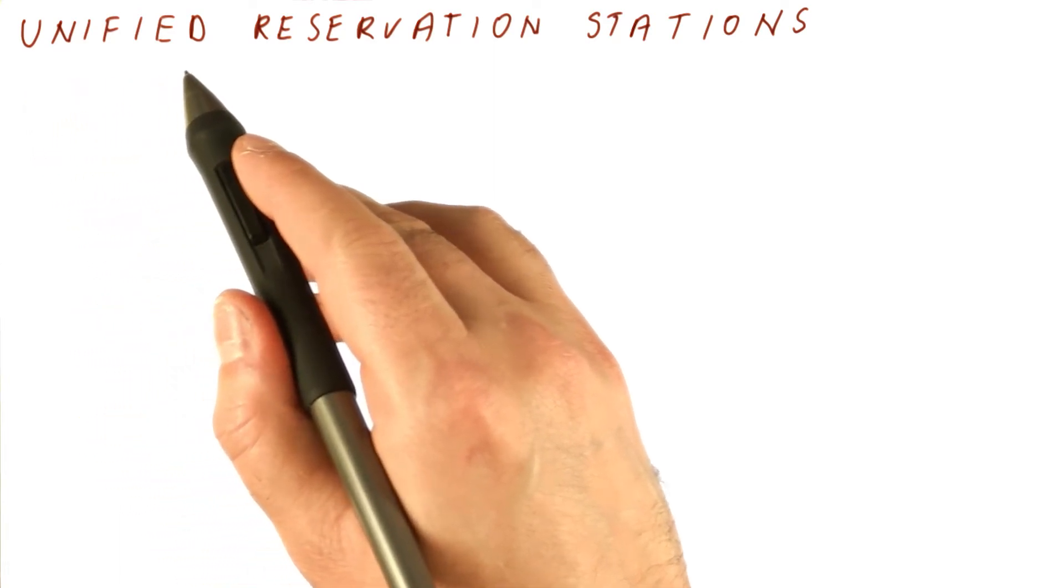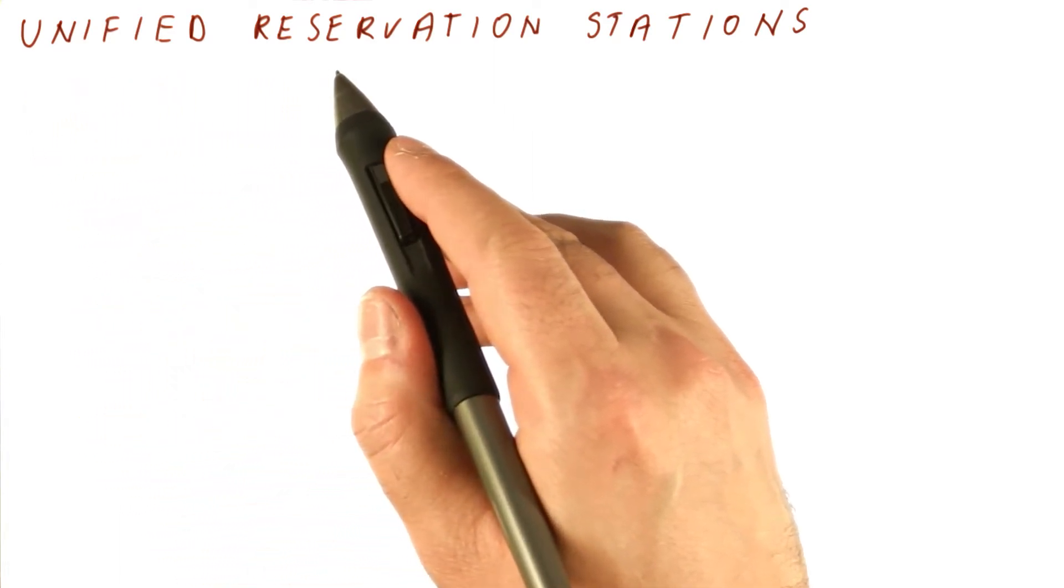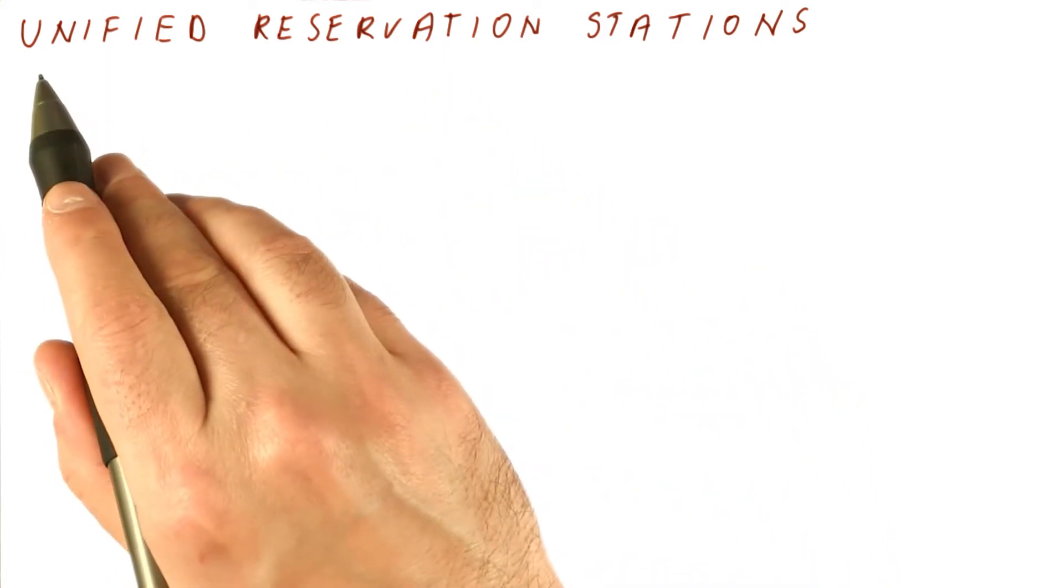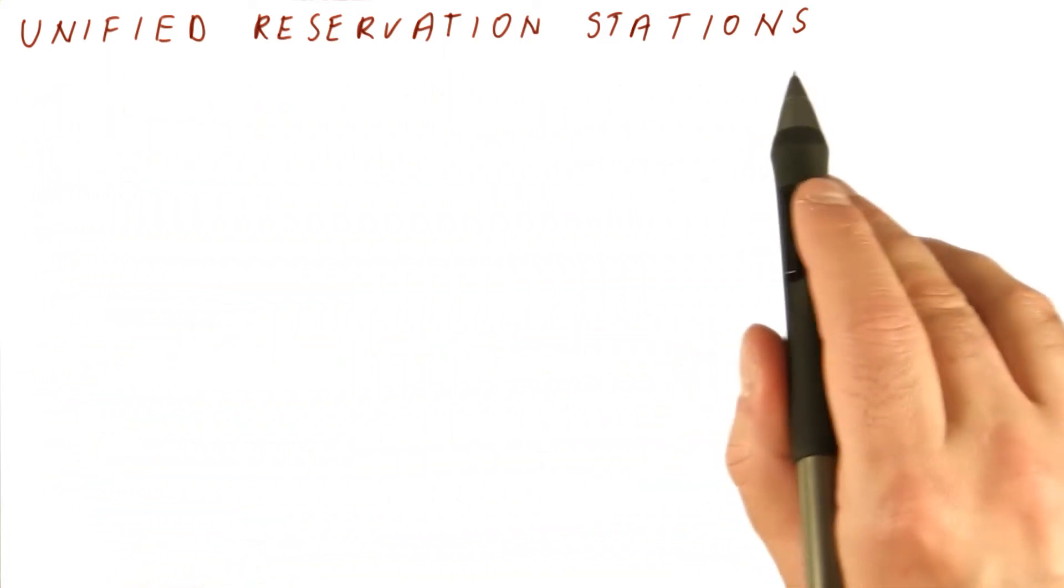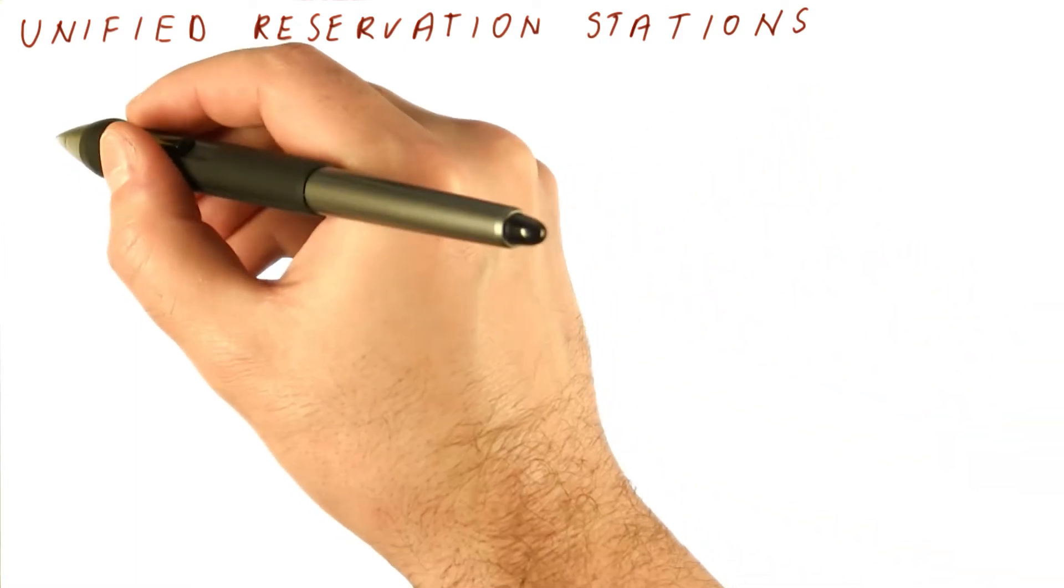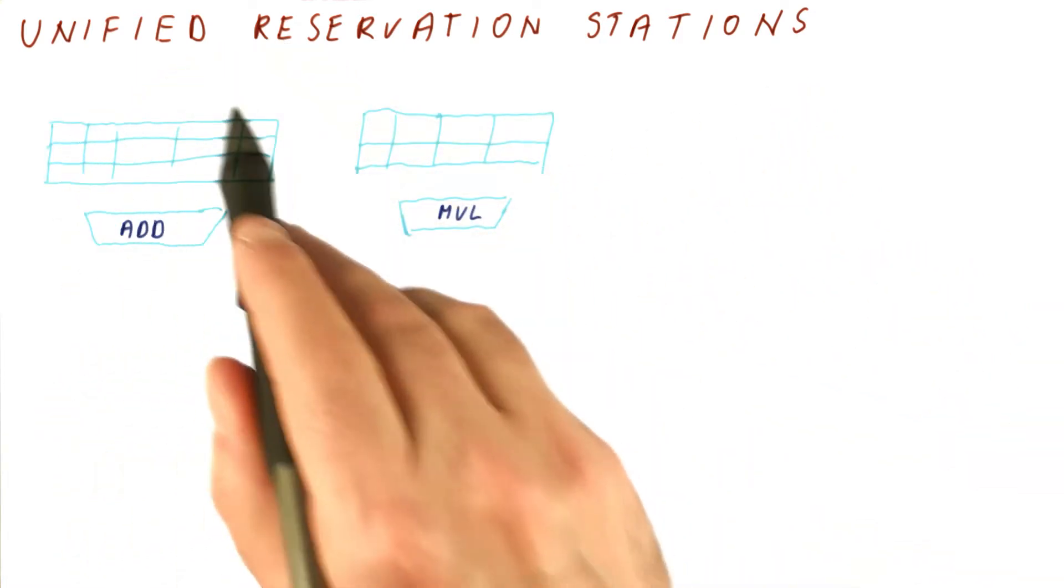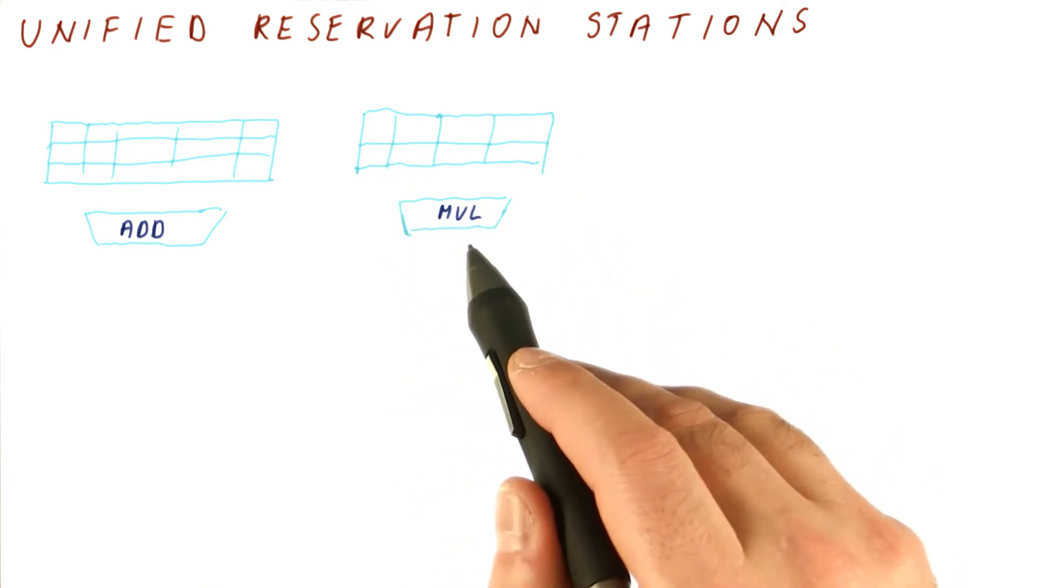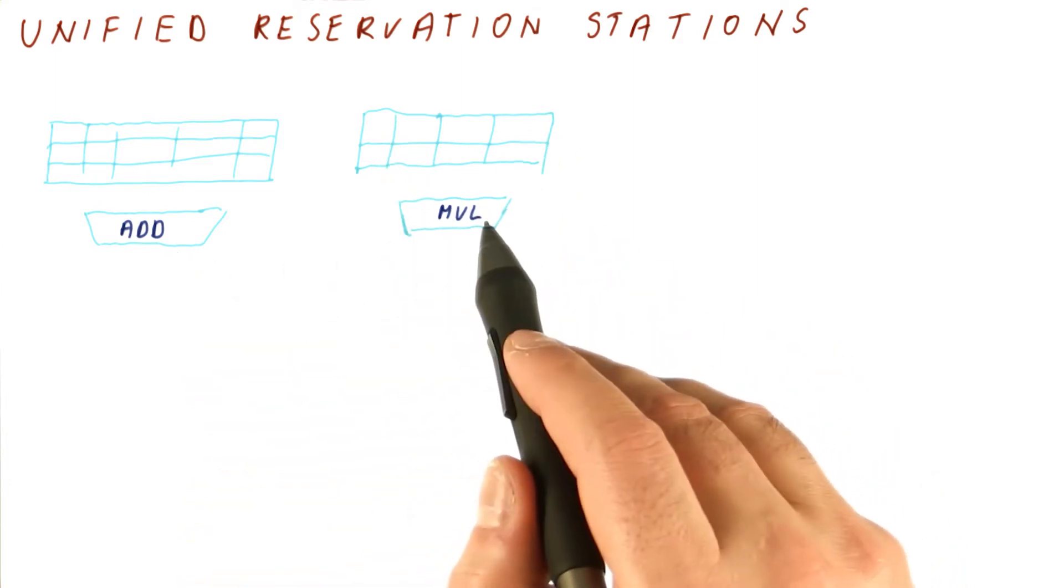Now that we have seen how the ROB based processor works when we have reservation stations for separate units separately, let's talk about unified reservation stations. So this is what we had so far. We had three reservation stations for the add unit and we had two for the multiply unit. This also does subtracts, this also does divides.